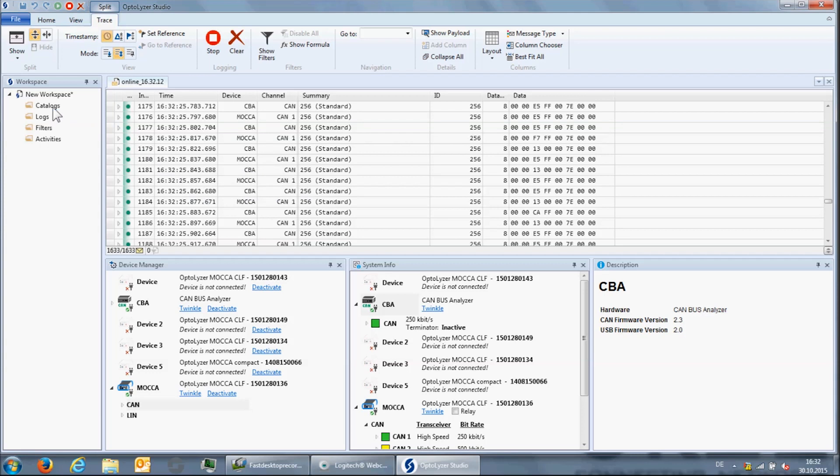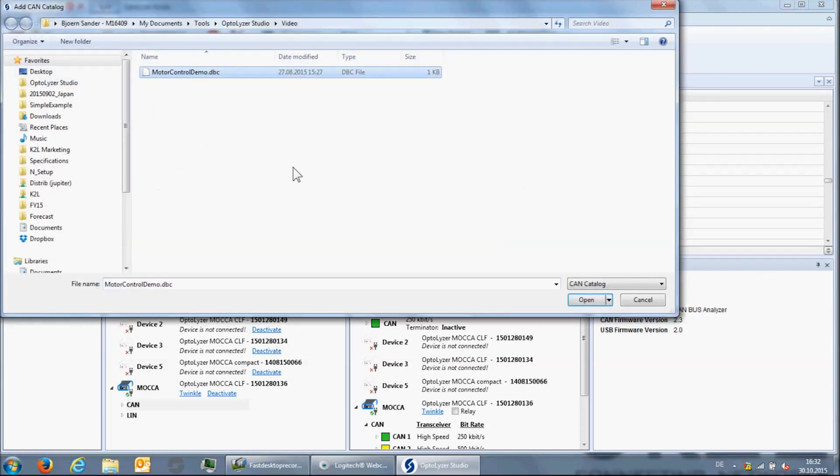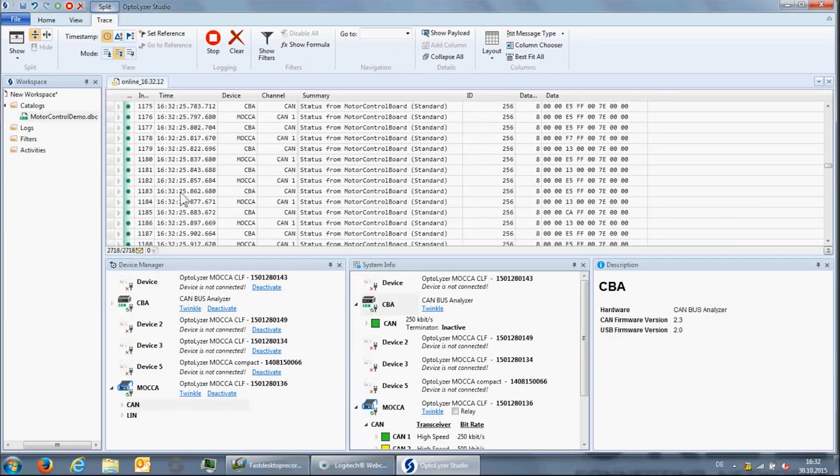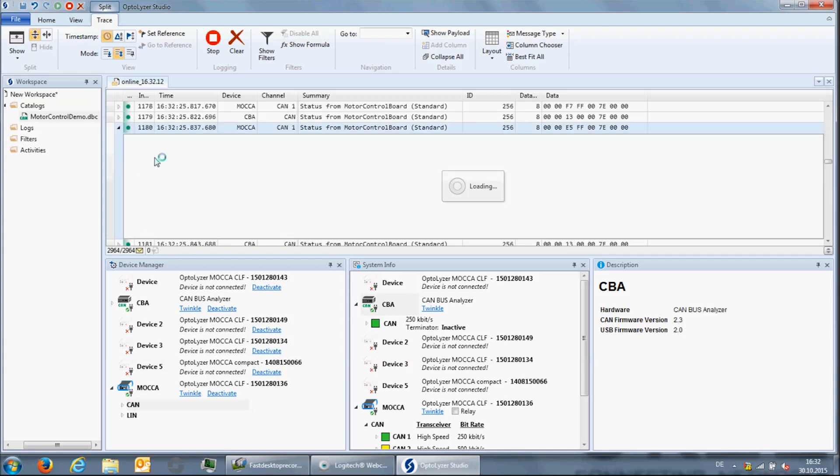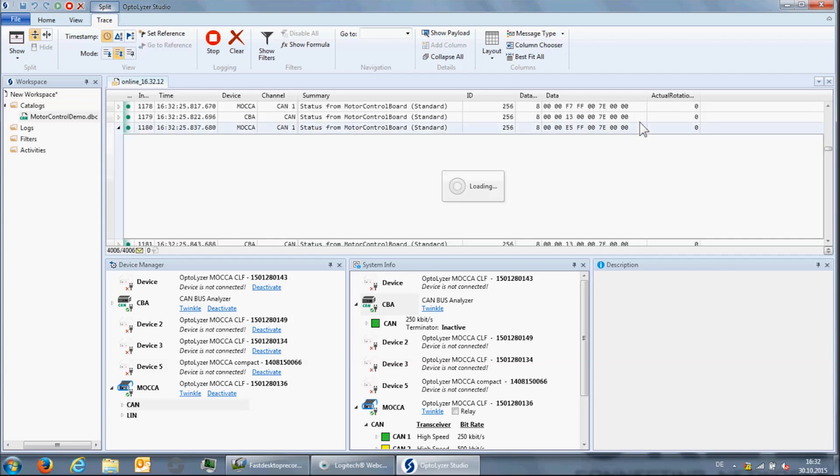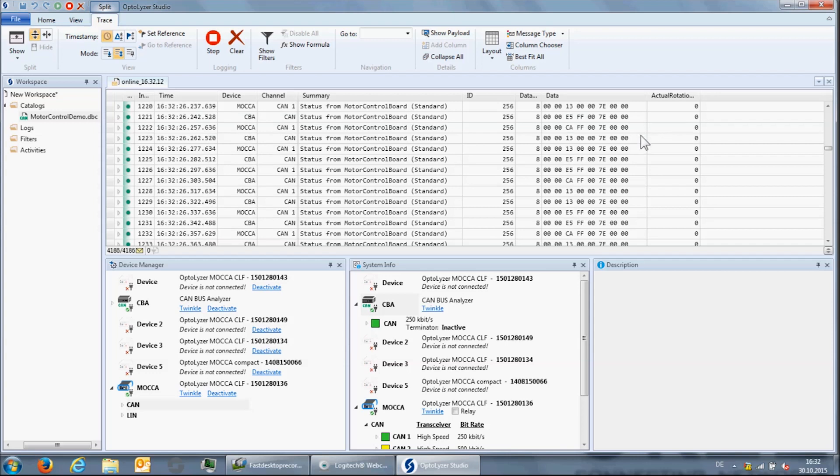So let us load a CAN database file in order to allow for disassembling the messages. The first thing to notice is that the summary column has changed and that the messages with ID 256 are status messages from the motor control board. If we want to get more detailed information about a message, we can open the detailed view. In the signals tab, we can see the values of the different signals contained in the payload of the message and drag and drop the signals into the trace view, for example, for the actual rotation speed.